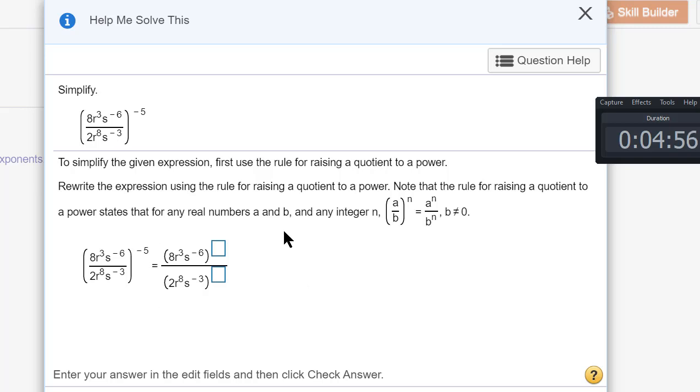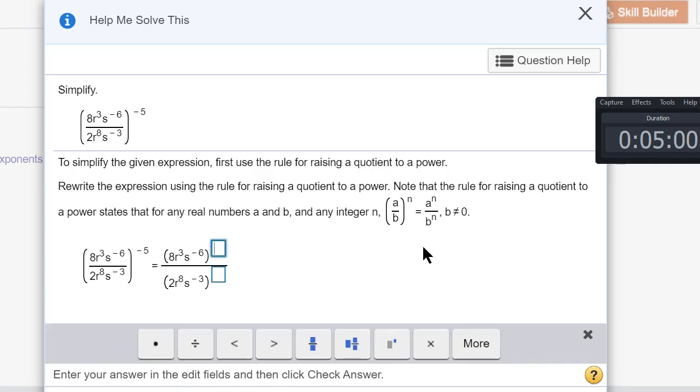So what this step is doing, this would be the first step, is I would type negative 5 here and negative 5 here. Which means my next step would be to raise all of this to the negative 5 power and all of this to the negative 5 power. I check my answer.